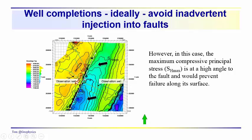Here's another example of that structure — we have a thrust fault, with laterals drilled into the Marcellus and some observation well locations noted. We can see the orientation of SH Max here. You also want to know where your faults are because in this particular case, SH Max is clamping these faults together at a fairly high angle. If it were oriented more to the north-northeast, it would come in at a lower angle to the fault, and accidental injection into the fault could make it critically stressed. But in the present example, SH Max is holding the fault together, so we don't have a lot to worry about on this reverse fault.